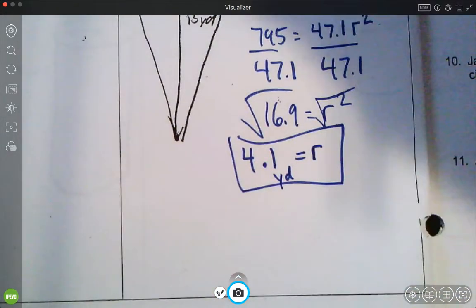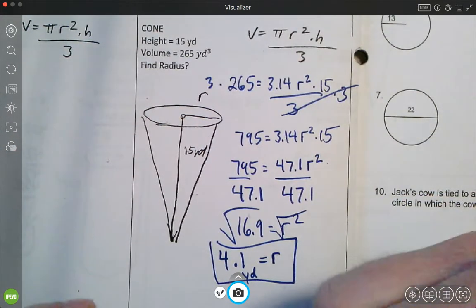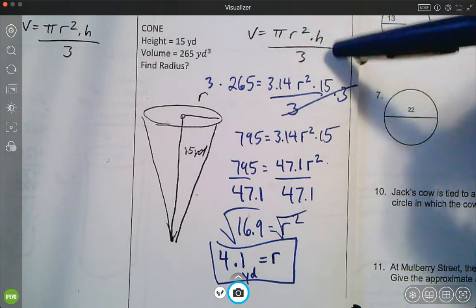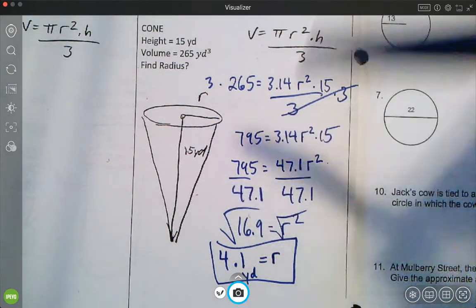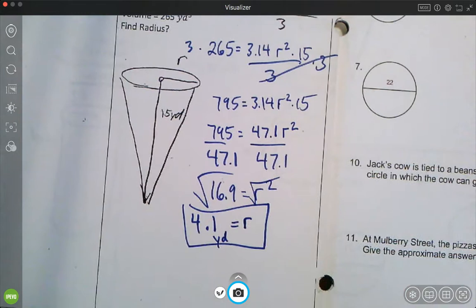Okay. So hopefully that helps you get started. Again, this one is probably more difficult because you have to multiply both sides by 3, and then at the end, you have to square root to find the radius. So hopefully that helps, and you're able to try numbers 1 through 10 for the practice today. Have a great afternoon and a great day.